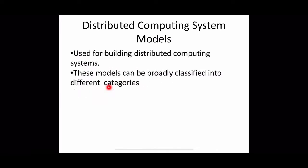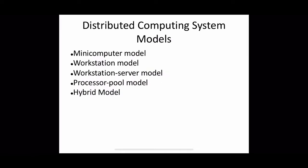Those five categories are: Mini Computer Model, Workstation Model, Workstation Server Model, Processor Pool Model, and a combination of these base models called the Hybrid Model. Let us see them one by one.